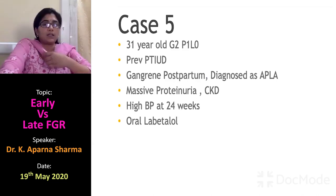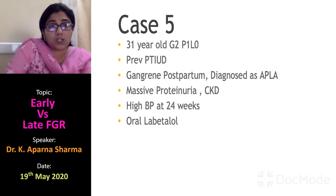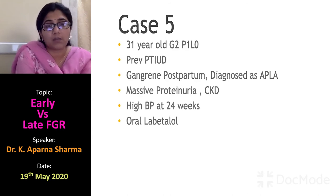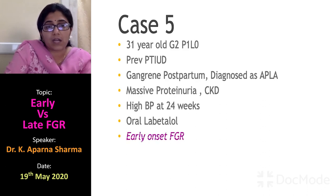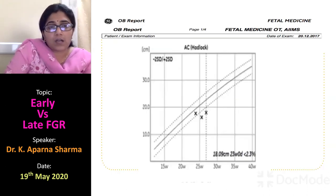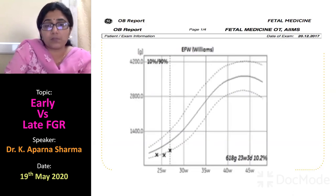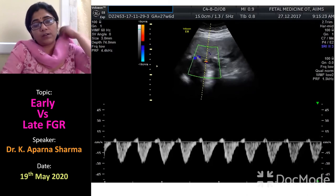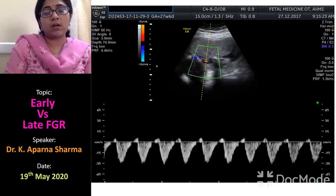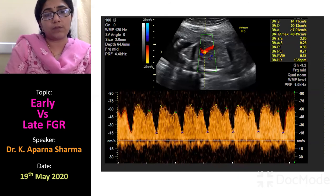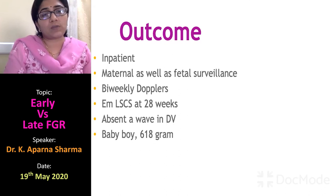A difficult stage three FGR case: a 31-year-old with known APLA syndrome, previous IUD, massive proteinuria, and chronic kidney disease, already on antihypertensives. At 24 weeks she had early onset IUGR with EFW less than third centile. Because Dopplers were initially acceptable, we continued monitoring her almost daily. At 28 weeks, her Doppler showed reversed end-diastolic flow, though DV still had forward flow. We delivered by caesarean section at 28 weeks. The baby boy was born at 618 grams and fortunately survived.